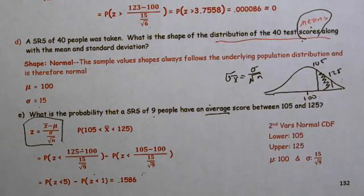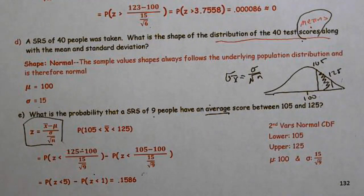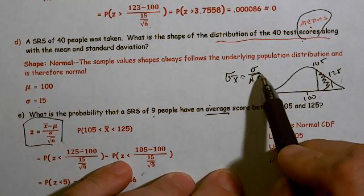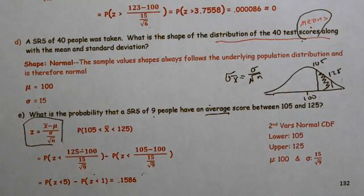In summary: if we are talking about individual values, they follow the underlying population distribution with the population mean and population standard deviation. If we are talking about the distribution of x̄ — the distribution of averages — the mean is still the population mean, but the standard deviation of x̄ = σ/√n. Please know that difference. Hope that helped.